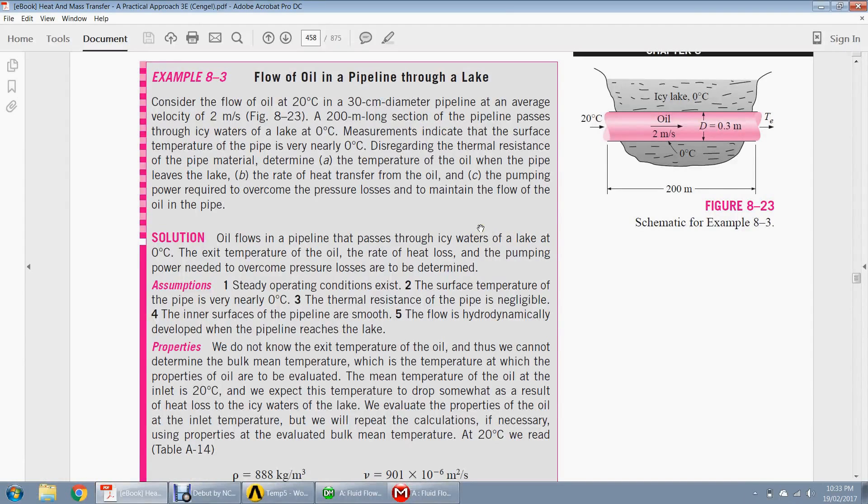In this problem, we have oil flowing through a lake so that the surrounding temperature could be considered uniform. We have a 200 meter long pipe, and the diameter of the pipe is 0.3 meter, and the inlet temperature of oil is 20 degrees and the inlet velocity is 2 meter per second, which is assumed to be constant throughout the whole length.